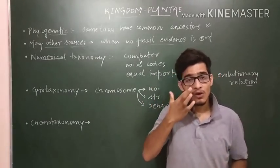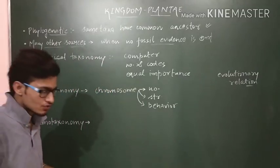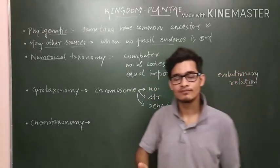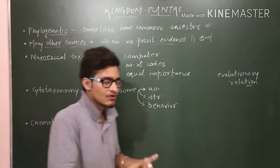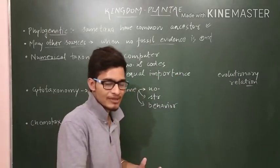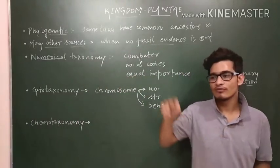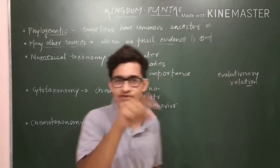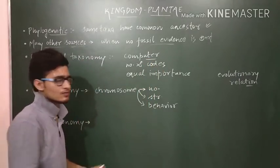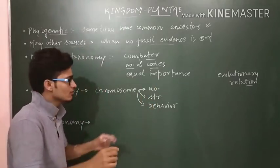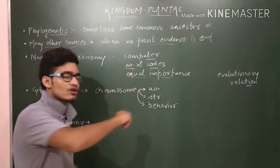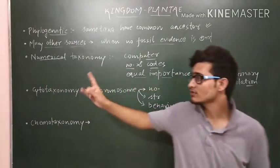In numerical taxonomy, all observable characters are given some codes and numbers and they are tallied in a computer. For example, leaf shape, leaf color, plant height, chemicals present inside — any character can be included. A code or symbol is given to each and all are recorded in the computer as a serial number. All characters are given equal importance, and hundreds of characters can be taken into consideration at one time.